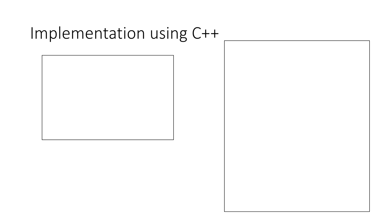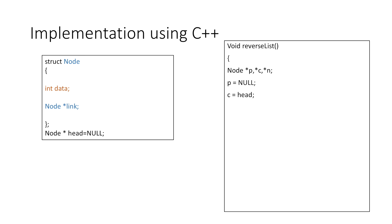Now let's implement this in C++. This is the basic structure of our node. We start the reverse list function and declare three pointers p, c, and n, corresponding to the previous, current, and next pointers. We set the previous pointer equal to null and the current pointer equal to head, pointing to the first element. We then start a while loop with the condition that c is not equal to null — the loop runs as long as c is not null, since our exit condition is when the current pointer reaches null, meaning no more nodes remain to be reversed.